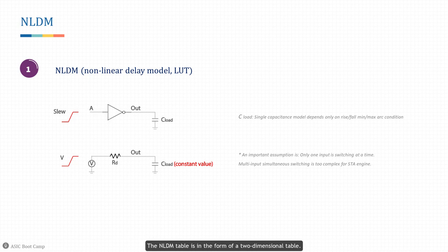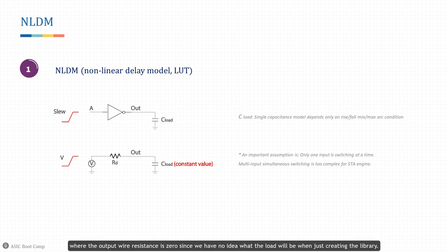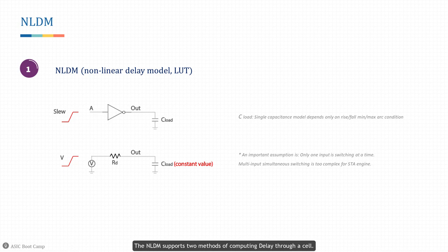The NLDM table is in the form of a two-dimensional table. Note that the NLDM table is characterized under the condition where the output wire resistance is zero, since we have no idea what the load will be when just creating the library. The NLDM supports two methods of computing delay through a cell.